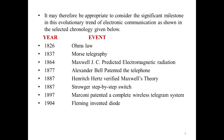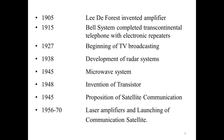It started in 1826 with the discovery of Ohm's law, followed in 1837 by Morse's telegraphy. In 1864 Maxwell predicted electromagnetic radiation. In 1887 Hertz verified Maxwell's theory, then followed by the telephone switch. Marconi patented a complete wireless telegraph system. Fleming invented the diode. De Forest invented the amplifier. Bell System completed transcontinental telephone with electronic repeaters.